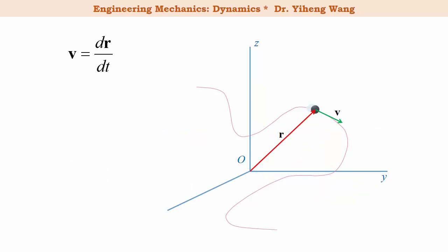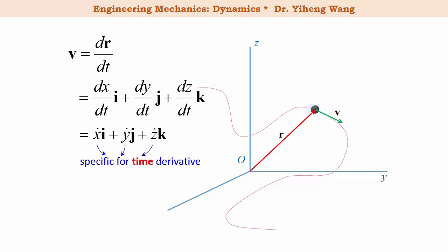Since r equals to xi plus yj plus zk in the rectangular coordinate system, the velocity is dr dt, which is simply dx dt i plus dy dt j plus dz dt k, or x dot i plus y dot j plus z dot k. The dots are specific for time derivatives.